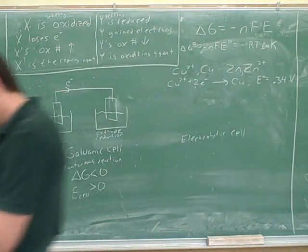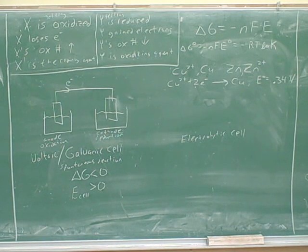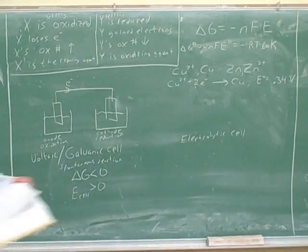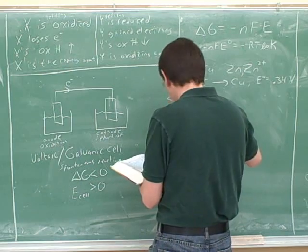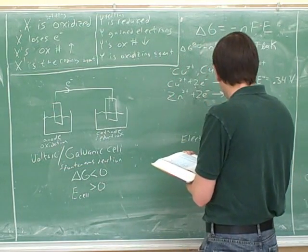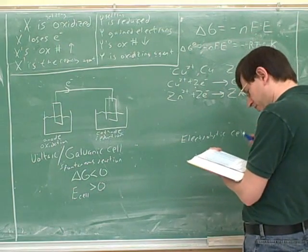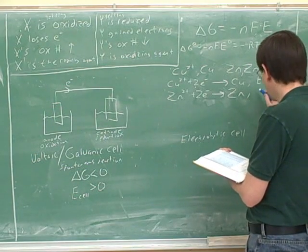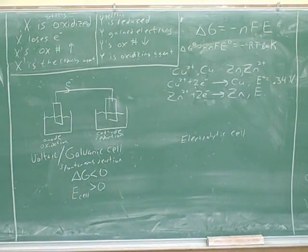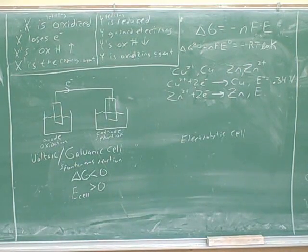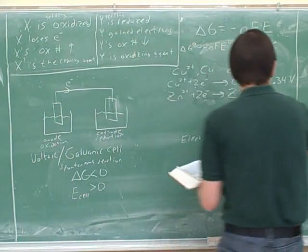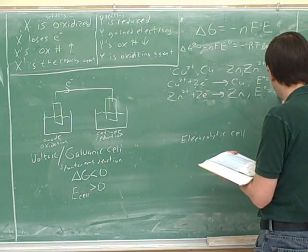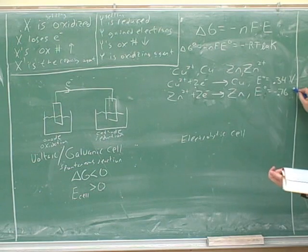All right, and now let's find the row for zinc. And that's got the correct charges in it as well. Good. What's the potential for that reaction? Negative 0.76. What are the units on that 0.76? Volts. Right. Potentials are in volts.